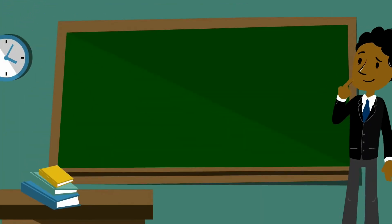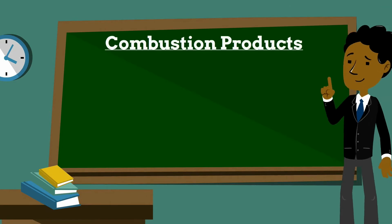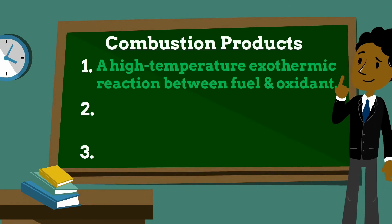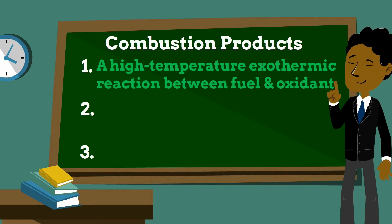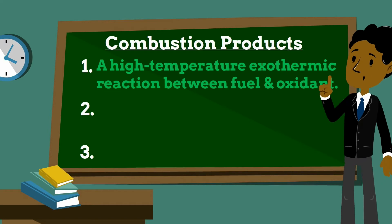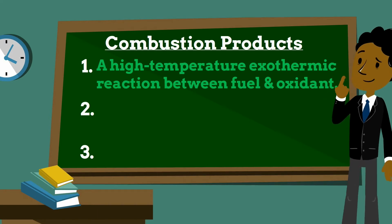Today we will revisit the topic of combustion and its products. As we discussed in episode 17, combustion is a high-temperature exothermic redox chemical reaction between a fuel and an oxidant, usually atmospheric oxygen, that produces oxidized, often gaseous products in a mixture termed as smoke.